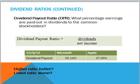The dividend payout ratio measures the percentage of earnings that are paid out in dividends to the common shareholders. We take dividends divided by net income. Currently, Microsoft is paying out 35% of net income as dividends — returning 35% to the shareholders. Apple is currently returning 27%. Google is currently returning 0%. Whether a high dividend payout is good or bad again depends on what you are looking for.